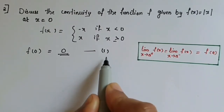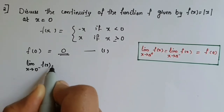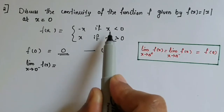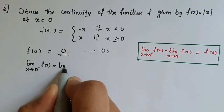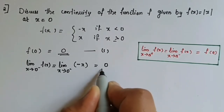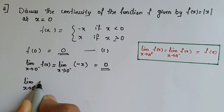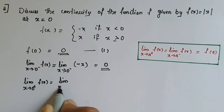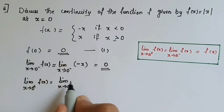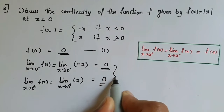The left-hand limit of f at 0 is limit x tends to 0-minus of f of x. Since for x less than 0 the function is minus x, this equals limit x tends to 0-minus of minus x, which equals 0. Similarly, the right-hand limit of f at 0 is limit x tends to 0-plus of f of x. For x greater than 0 the function is x, so this equals limit x tends to 0-plus of x, which equals 0. This is our second condition.